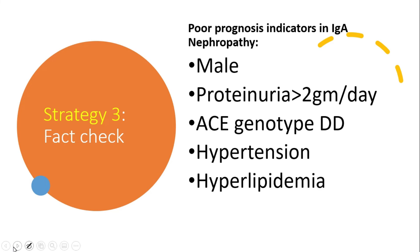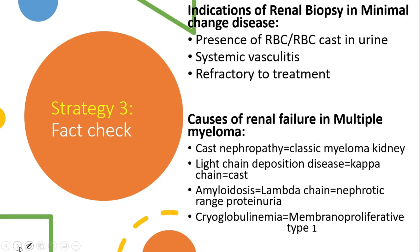A very common question regarding IgA nephropathy involves the poor prognosis indicators. Indications for renal biopsy in minimal change disease is also a commonly asked question. Multiple myeloma is a very important topic — you must know it inside out. A very commonly asked question in nephrology from multiple myeloma is: what are the various ways multiple myeloma can affect the kidney? Please prepare this part very well.